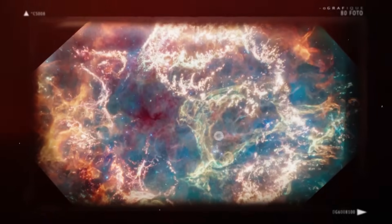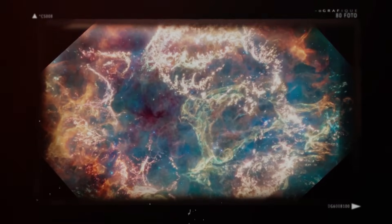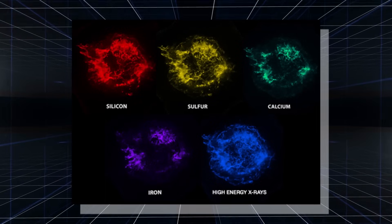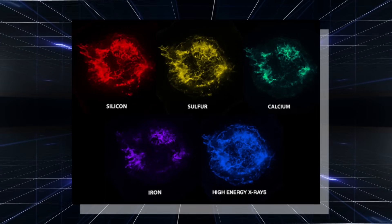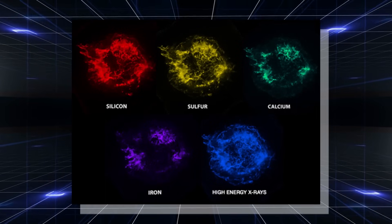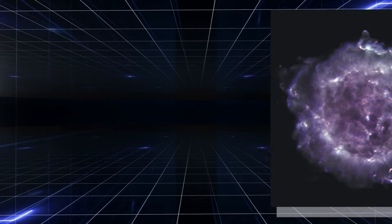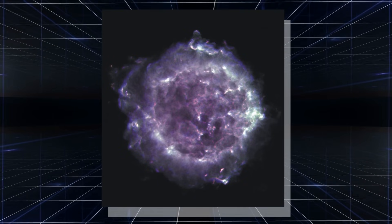In April of this year, Webb imaged the stellar remains in mid-infrared light. Now, the newly released snapshot shows Cas A's colorful, orb-like wisps captured using James Webb's NIRCam.